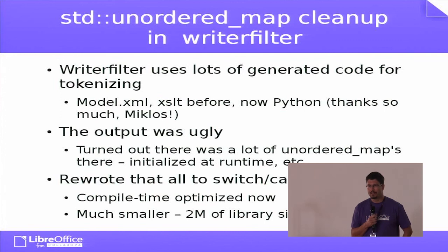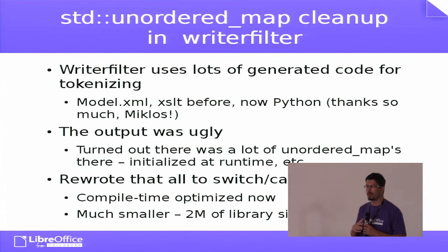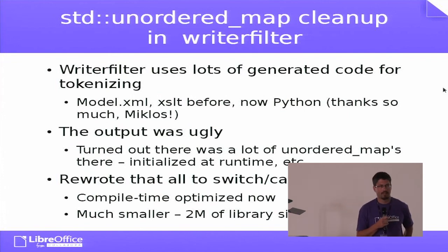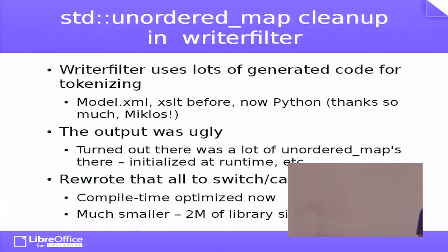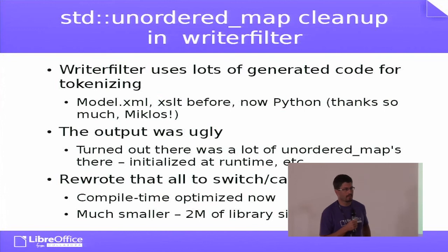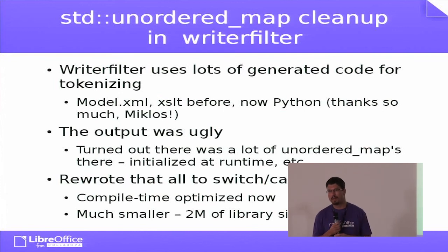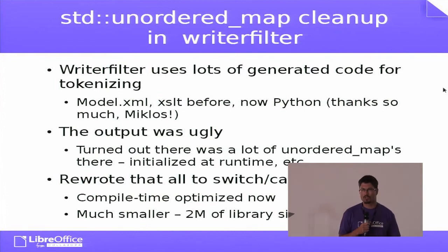After we had it in Python I was able to change it so that the code was actually readable, and it struck me how terrible it was — because it was using boost unordered maps to store all the things that you are supposed to tokenize. Every time you started to do something with writer filter, you had to create these unordered maps before you could use them. It was not optimized by the compiler at all; it was relying solely on the boost unordered map being fast enough to look up strings or IDs.